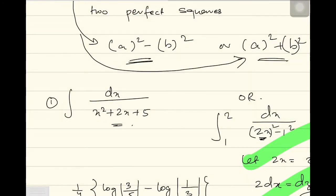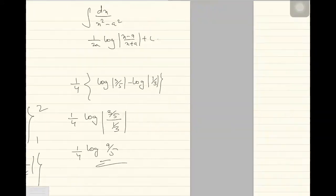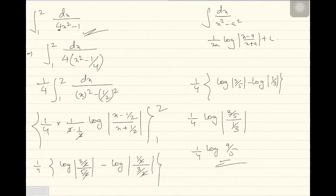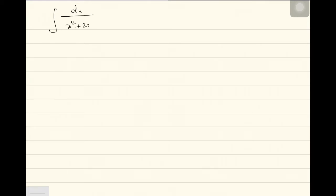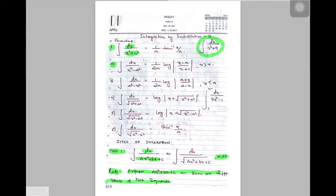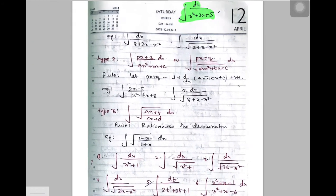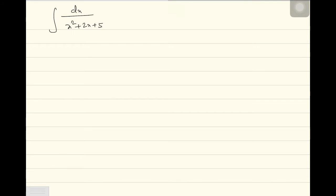Now let us come to the sum we were about to discuss earlier: integration dx divided by x squared plus 2x plus 5. According to the rule, I need to express the denominator as a sum or difference of a perfect square.